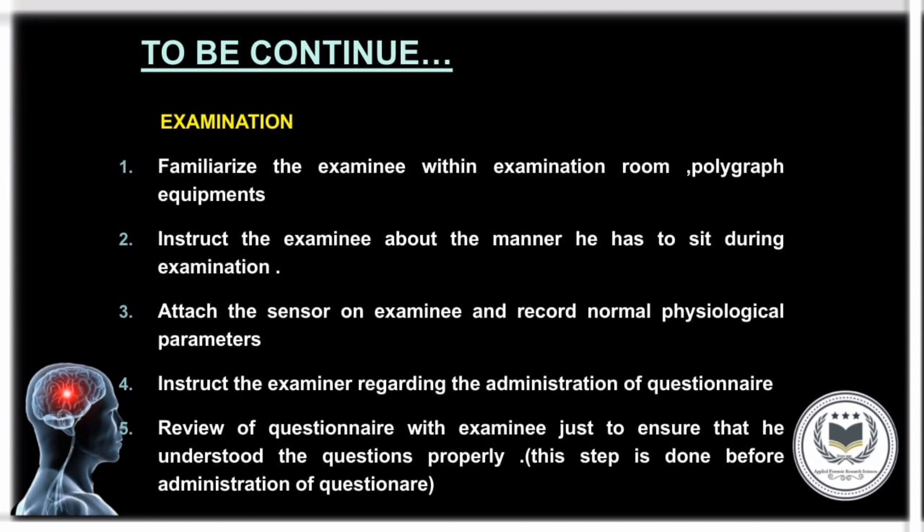Administration of questionnaire: each questionnaire is administered three times in a run. While asking questions, there will be a gap of 25 seconds after each question in order to activate and normalize the sympathetic and parasympathetic components of the autonomic nervous system. Markings should be made on the chart at the start and end of each question to indicate the responses of the subject on the chart.